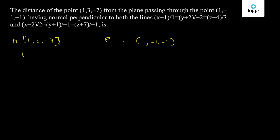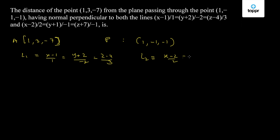The lines are: L1 equal to x-1 upon 1 equal to y-2 upon -2 equal to z-4 upon 3, and L2 is x-2 upon 2 equal to y+1 upon -1 equal to z+7 upon -1.